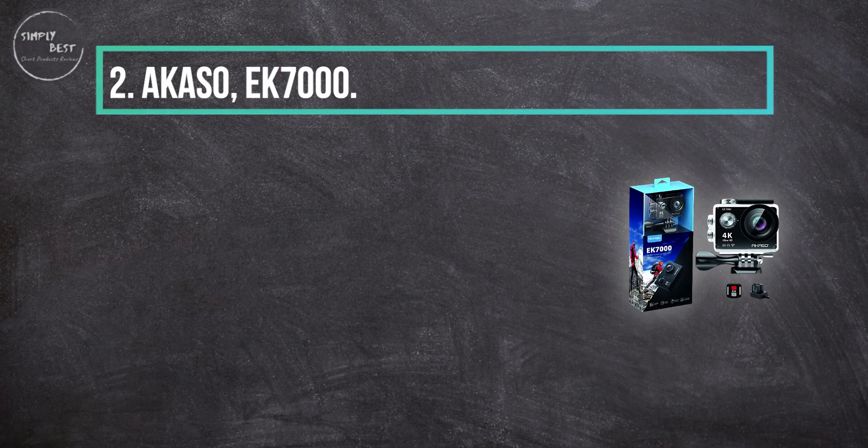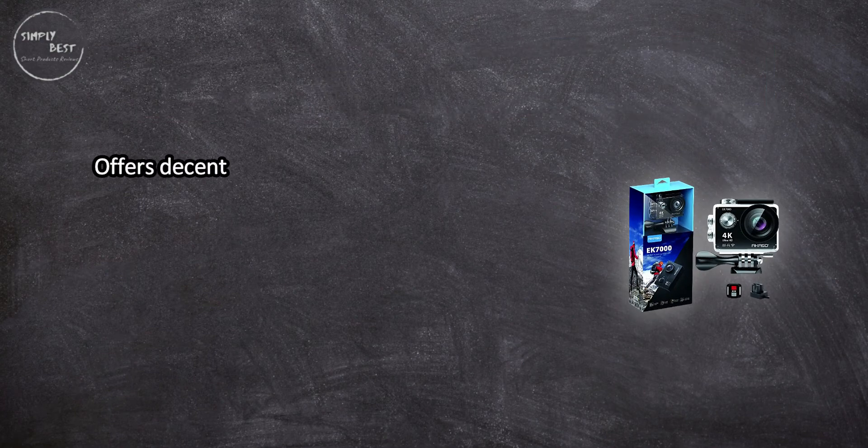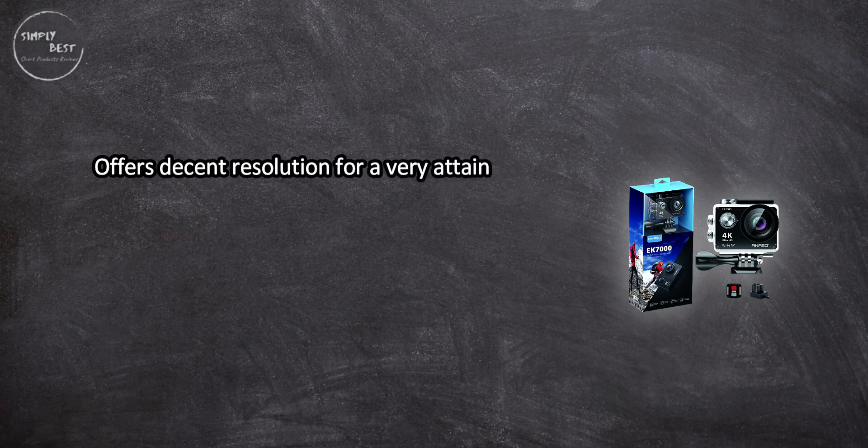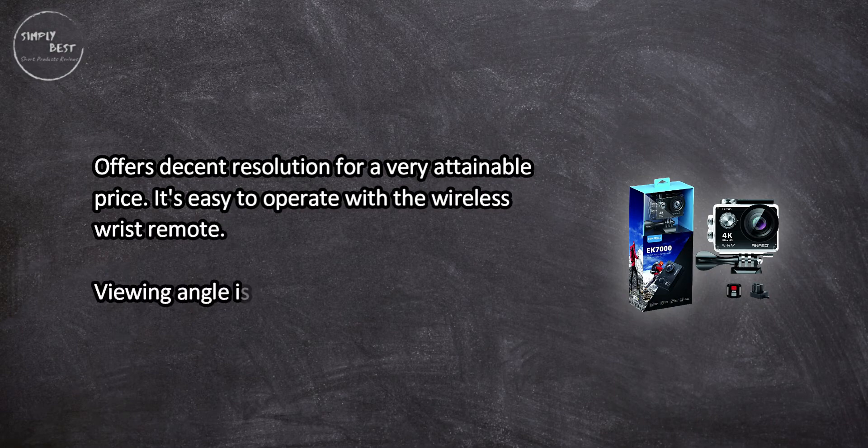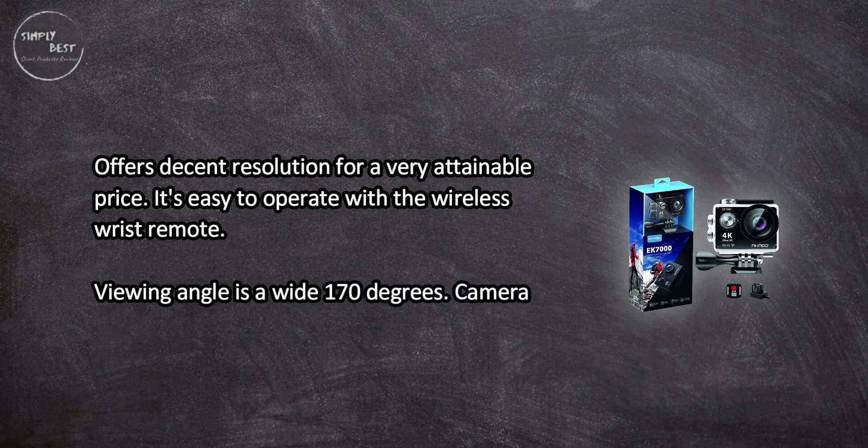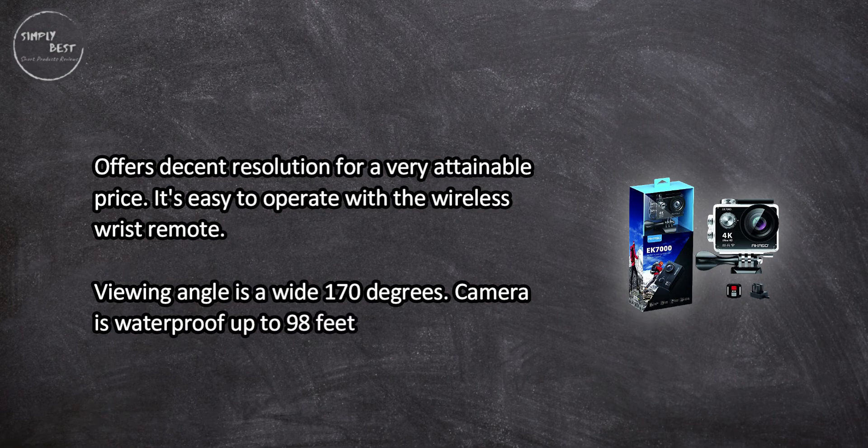At number two, Akaso EK7000. Offers decent resolution for a very attainable price. It's easy to operate with the wireless wrist remote. The viewing angle is a wide 170 degrees. The camera is waterproof up to 98 feet.